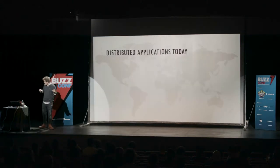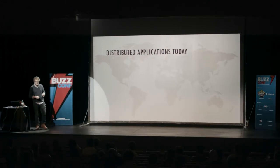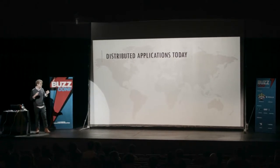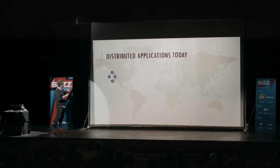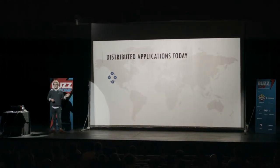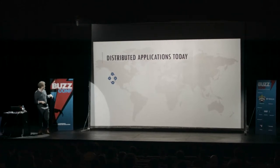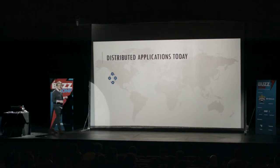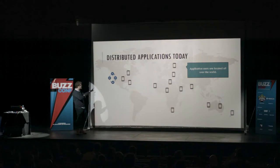To get right into it, building distributed applications — we're all doing it, it's hard, and there's a lot of researchers working on the problems. To summarize the challenges: normally what we do is deploy a bunch of servers, typically pick some Amazon region, say the Los Angeles data center, and deploy all our cloud services there.